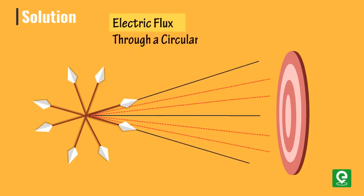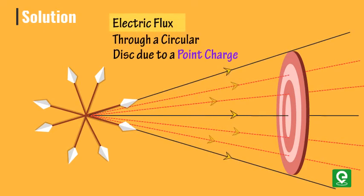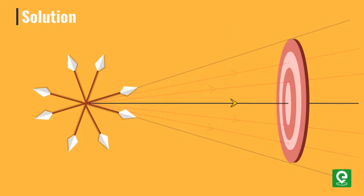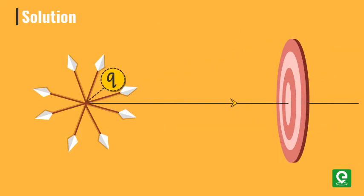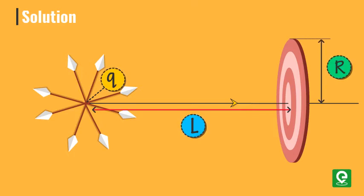Let's move on to find the electric flux through a circular disk due to a point charge. A point charge q placed at a distance l from a circular disk of radius r.